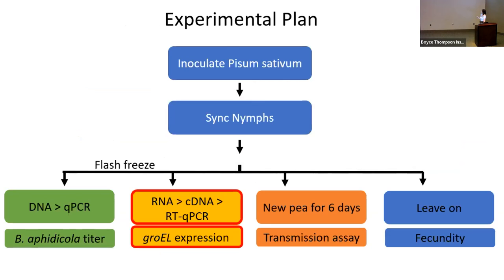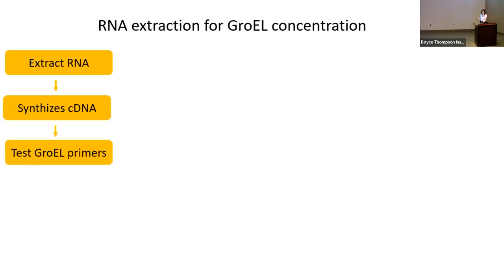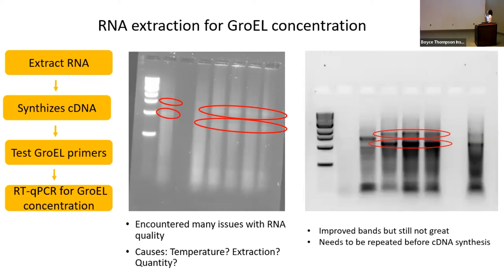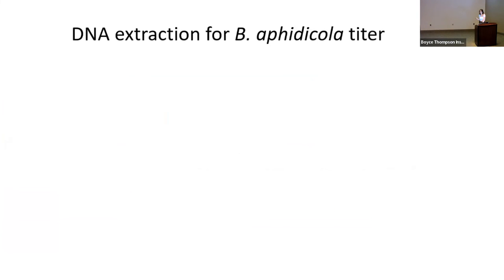For GroEL expression, we need RNA. The process involves extracting RNA, synthesizing cDNA, testing primers, and then performing qPCR for GroEL concentration. We ran into quite a few difficulties — instead of clear bands we had streaks. We troubleshot for temperature, extraction method, and quantity issues, and got slightly better results with at least some banding visible, but there is still significant streaking. We need to repeat the extraction before proceeding to any further cDNA synthesis.